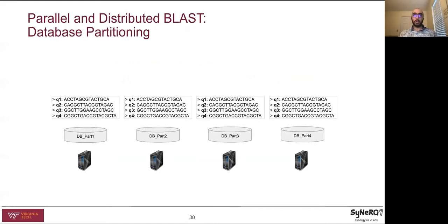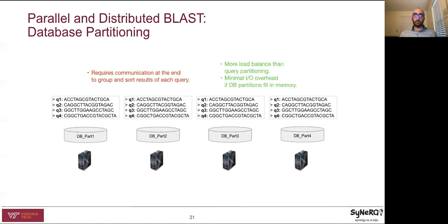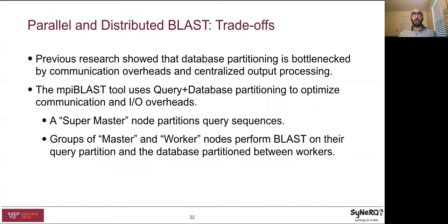Alternatively, we can partition the database and fit every database partition in the memory of a compute node. This requires replicating the query file to each node. This approach significantly improves performance compared to query partitioning due to reducing IO overhead for databases that do not fit in memory. However, it requires communication at the end to group and sort the results of every query by score and e-value. Previous research showed that database partitioning is bottlenecked by communication overhead and centralized output processing. For this reason, MPI BLAST uses query plus database partitioning to optimize communication, IO, and computations.